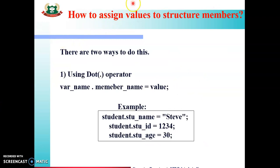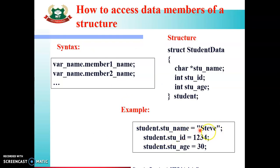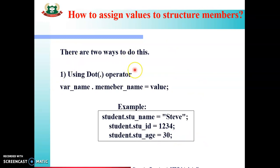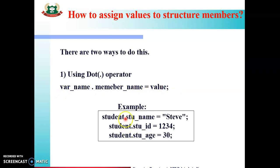How to assign values to structure members — this is nothing but initialization of values to data members. There are two ways to assign values to structure members. The first way, which we have already seen, is using the dot operator. Syntax: variable_name.member_name = value. For example: student.student_name = "Steve"; student.student_id = 1234; — and so on for each member.